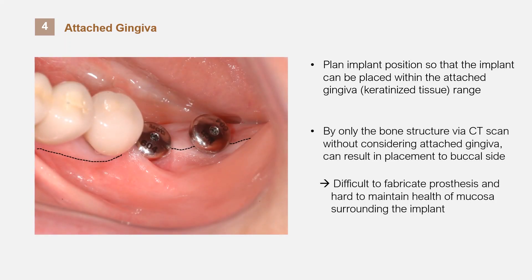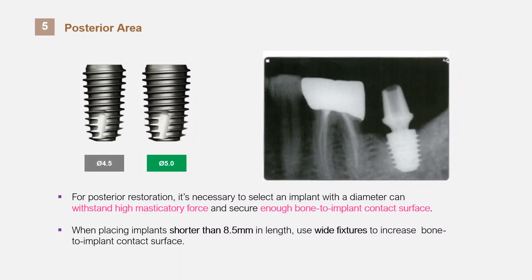The attached gingiva plays an important role for the implant and natural teeth. It has to be planned so that the implant is placed within the range of attached gingiva at most. If the implant is positioned by only considering the bone structure and not considering the attached gingiva, there is a high possibility of placing the implant towards the buccal side, making it difficult to produce a prosthesis and maintain the health of the mucous membrane around the implant. In the case of teeth in the posterior area, it must be planned with an implant that can withstand the masticatory force and has sufficient bone-to-implant contact surface. If the fixture diameter is wide, you can choose a shorter implant, but if the diameter is narrow, the implant has to be long so it has enough surface area for osseointegration.